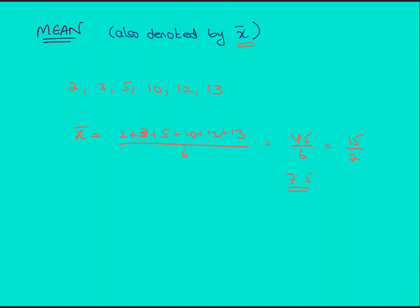Let's say the set we have is 3, 4, 7, 8, and 5. To find the mean of this data set, just add these values: 3 plus 4 plus 7 plus 8 plus 5, divided by 5, since there are 5 data values. The sum is 27, and 27 by 5 is 5.4.